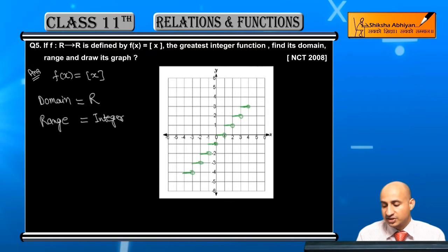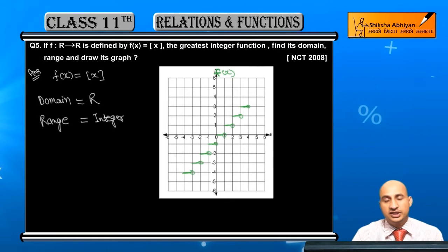So we will make this graph. And here, what is y? This is not y, this is f(x), and here is x. So this is the greatest integer function graph.